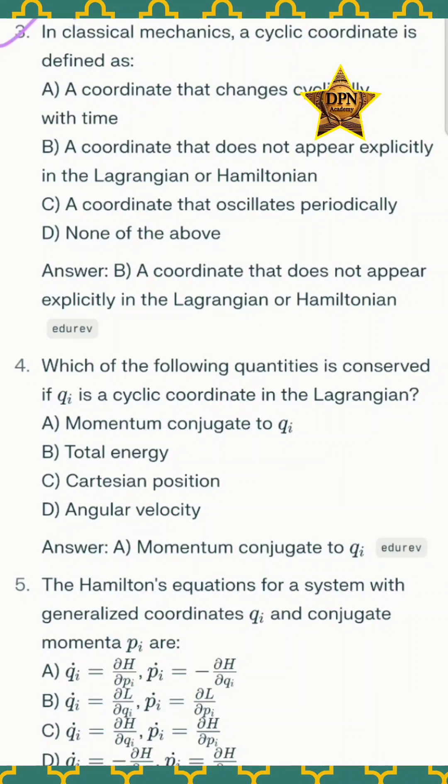Question number three: in classical mechanics, a cyclic coordinate is defined as - the correct option B, a coordinate that does not appear explicitly in the Lagrangian or Hamiltonian.